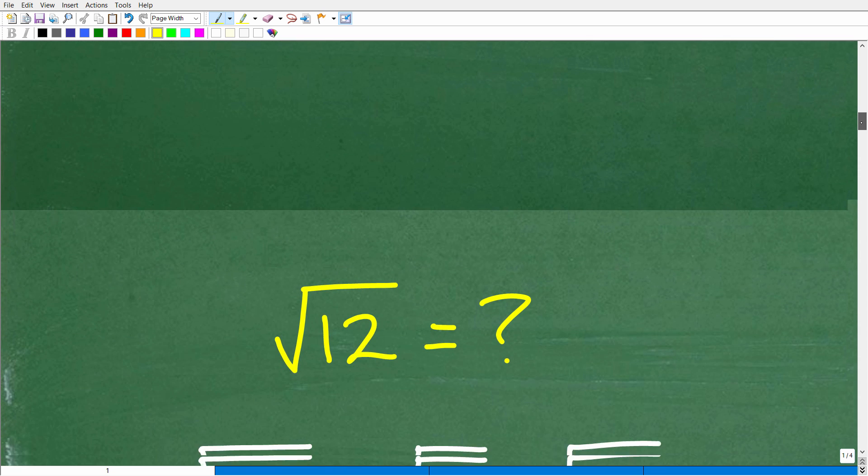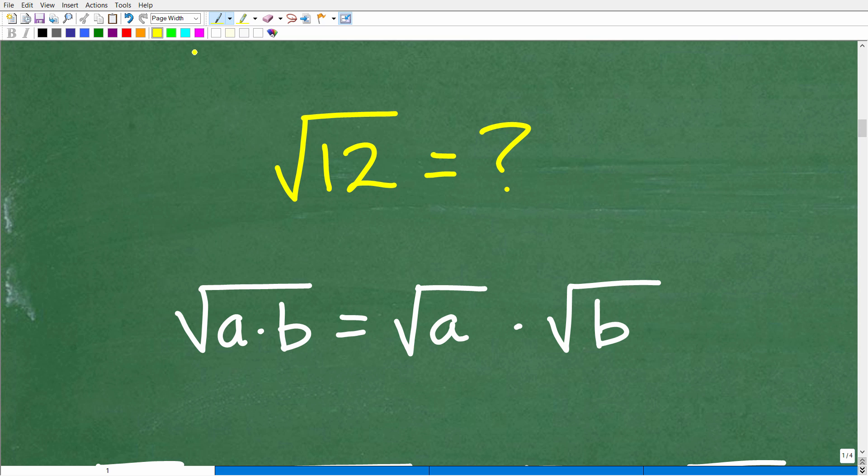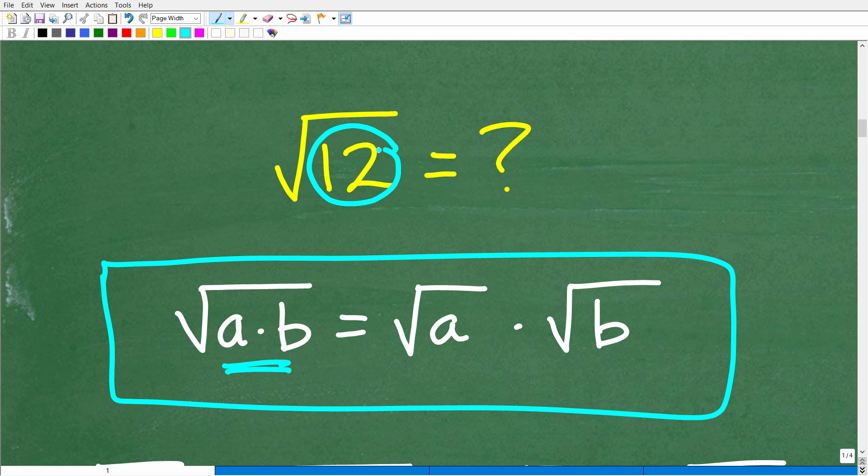So the first thing that we have to understand is this property of square roots. And the property is the following. The square root of A times B is equal to the square root of A times the square root of B. So what is this saying? Well, it's saying the square root of two things or two or more things being multiplied together. Now, these things are called factors, right? So this is a fantastic property of square roots, and it actually works both ways.